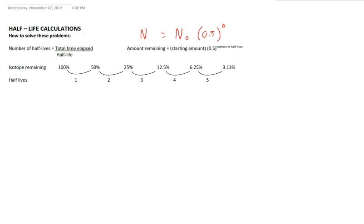You can determine how many half-lives have passed by taking the total amount of time from the problem, dividing that by the length of just one half-life. And this is just a graphical representation of what's happening.